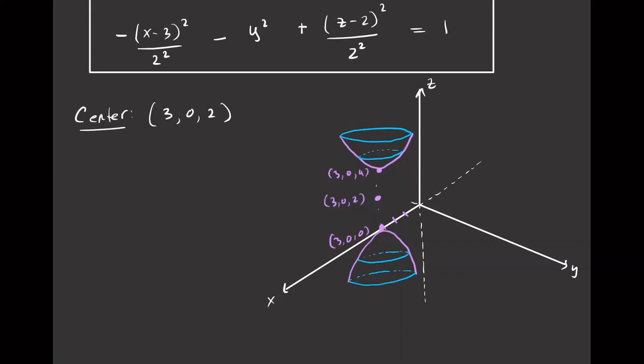If you want, you can also add the hyperbola in the XZ plane, though it's hard to draw since it's in the background. Those are the other two hyperbolas. So this is it for the hyperboloid of two sheets.